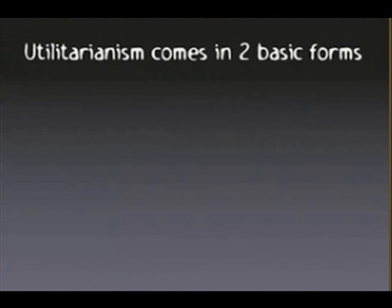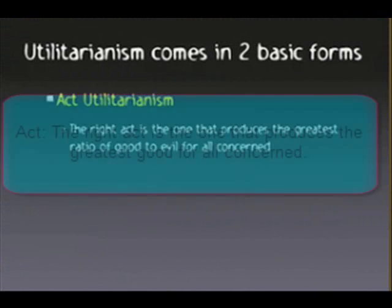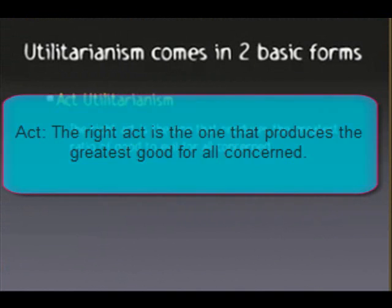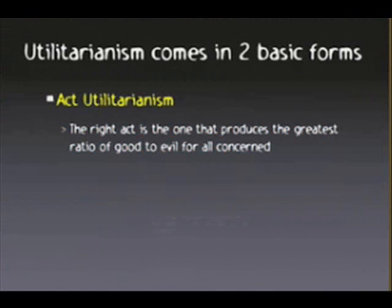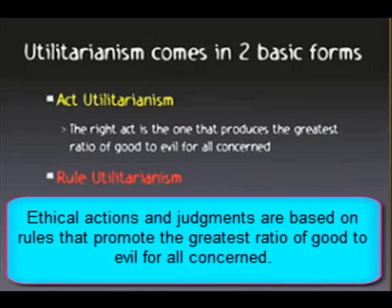Utilitarianism comes in two basic forms. Act Utilitarianism says that the right act is the one that produces the greatest ratio of good to evil for all concerned. Rule Utilitarianism says that ethical actions and judgments are based on rules — those rules promote the greatest ratio of good to evil for all concerned.